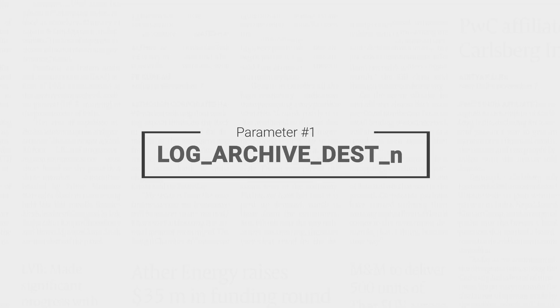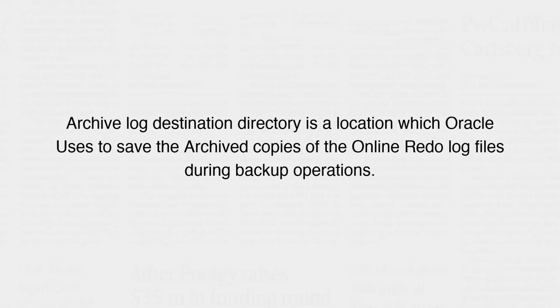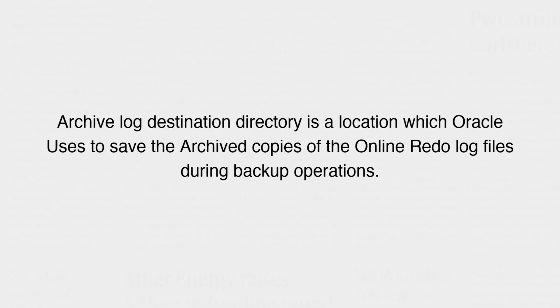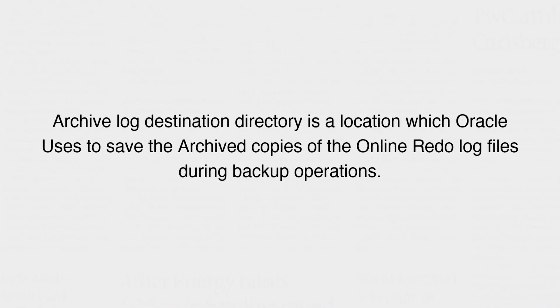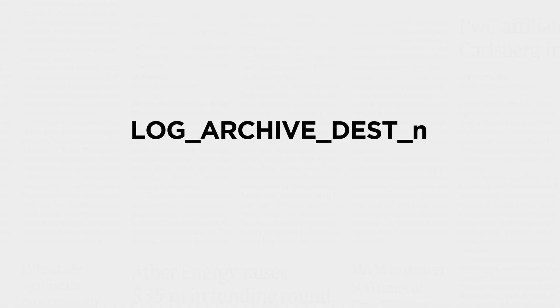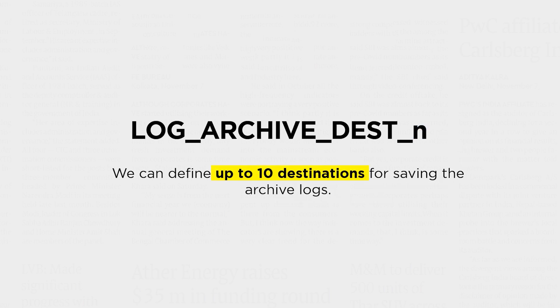Let's start with the first one: LOG_ARCHIVE_DEST_N. Archive log destination directory, as the name suggests, is a location which Oracle uses to save the archived copy of online redo log files during backup operations. The prefix N is a number in the range of 1 to 10. Using this parameter, we can define up to 10 destinations for saving the archive logs.